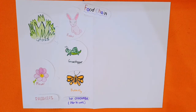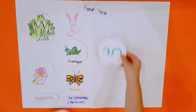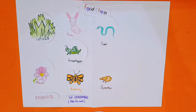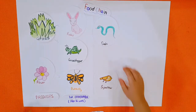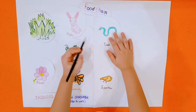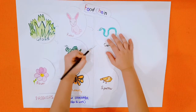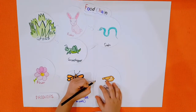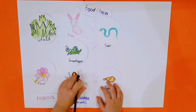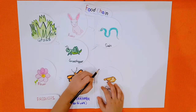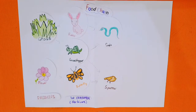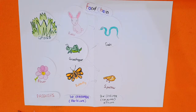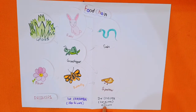Thirdly, there's snake and sparrow. Snakes eat rabbit and grasshopper, and sparrow eats butterfly and grasshopper. These are called second consumers, which are carnivores or omnivores.